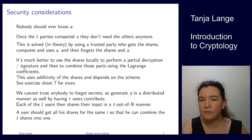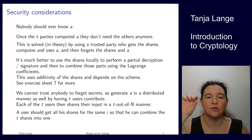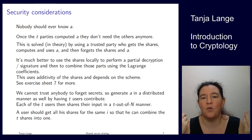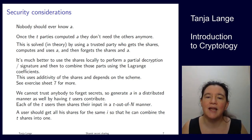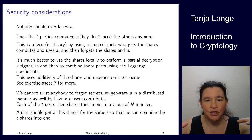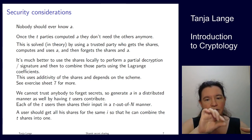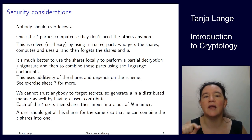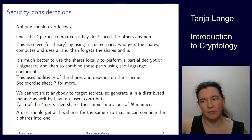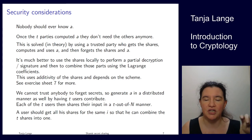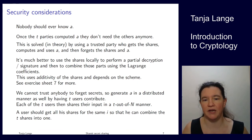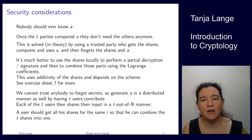Each of the t contributors then shares out their piece a_i in a t-out-of-n manner to all n parties. User 1 shares a_1, user 2 shares a_2, and so on. None of the t contributors knows the whole thing — only one out of t pieces. Each of the n users then receives t shares, one from each contributor.